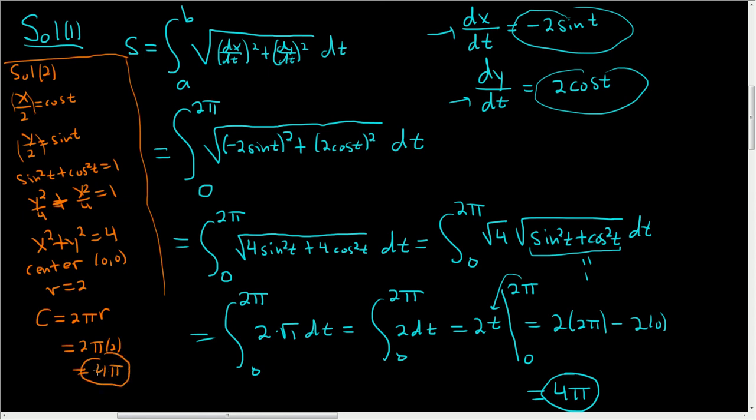So if you recognize that the parametric equations give you a circle of radius 2, then you know that the circumference is 4π. And that's the same answer we got using the arc length formula from calculus. I hope this helps.